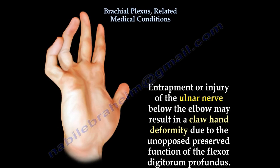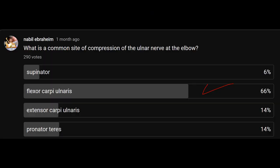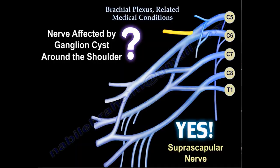Sometimes entrapment of the ulnar nerve gives us claw hand, especially if the lesion is below the elbow. The common site of compression of the ulnar nerve at the elbow is the flexor carpi ulnaris.